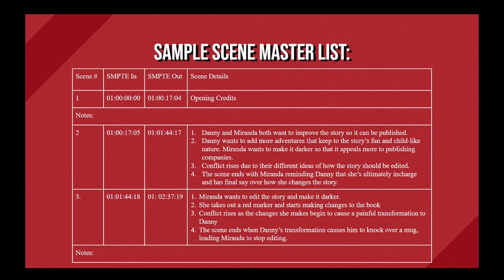Scene 3: SMPTE in 1:01:44:18, SMPTE out 1:02:37:19. Miranda wants to edit the story and make it darker. She takes out a red marker and starts making changes to the book. Conflict rises as the changes she makes begin to cause a painful transformation to Danny. The scene ends when Danny's transformation causes him to knock over a mug, leading Miranda to stop editing. Take your time as you create your own list — remember that this will be an important map that you will reference when deciding where music is needed in your film.